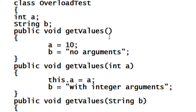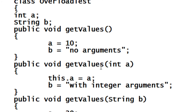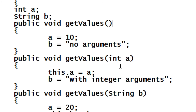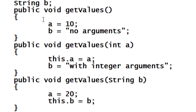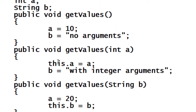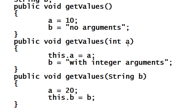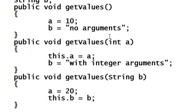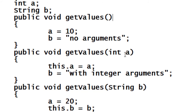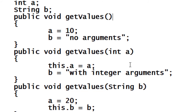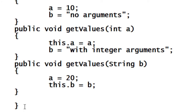In the first definition, there are no arguments. In the second, there is one integer argument. In the third, there is a string argument. Whenever we create an object, an appropriate method is invoked based on the number of arguments or type of the arguments.